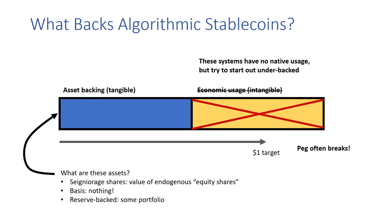There are also further complications about what the asset backing looks like in these systems. In seniored shares, the asset backing is really the value of endogenous equity shares, which have a largely self-referential price that can evaporate in a crisis. In the basis designs, there's really no asset backing. In reserve-backed systems, this is some portfolio of other assets. This differs from traditional currency pegs, where the actual pegged currency can be held in reserve — but U.S. dollars are inherently not an on-chain asset, so this is not possible in these systems.